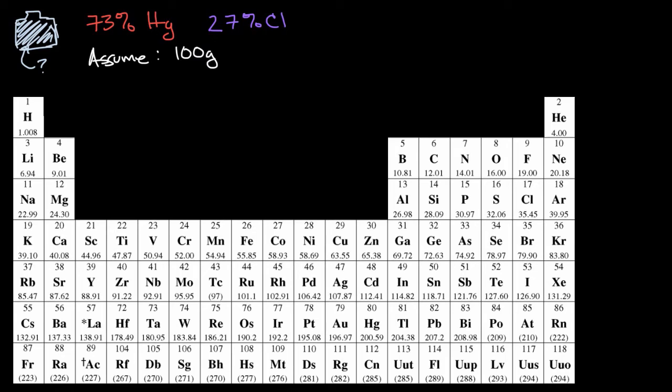So if we assume 100 grams, well then we have 73 grams of mercury, and we can figure out how many moles this is by looking at the average atomic mass of mercury. That's why that periodic table of elements is useful. We see that one mole of mercury is 200.59 grams on average.